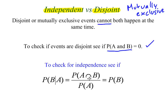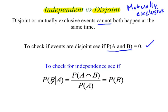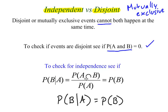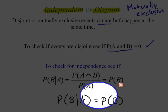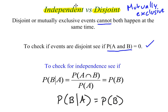Independence is a whole other thing. To check if two things are independent, you use this formula: if the probability of event B given event A is equal to the probability of event B, then they are independent. Sometimes we can go straight from P(B|A) to P(B) to check for independence. Independence and disjoint — or mutually exclusive — are not the same thing. They're two different concepts and you check for them in two different ways.